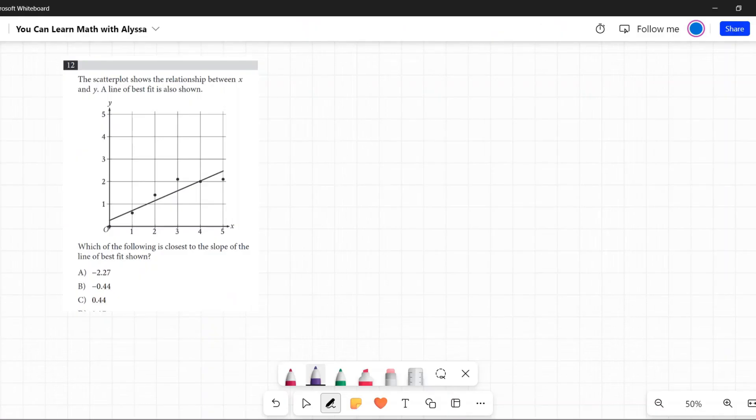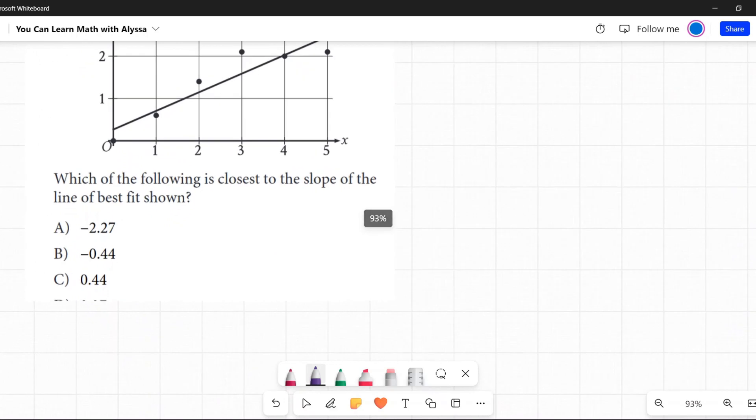The scatter plot shows the relationship between x and y. A line of best fit is also shown. Which of the following is closest to the slope of the line of best fit shown? And I realized that I cut off...